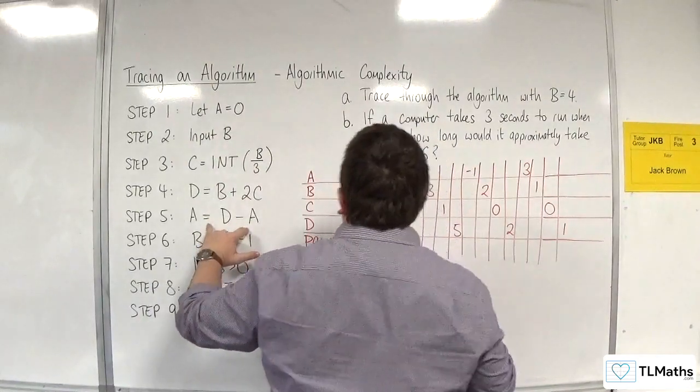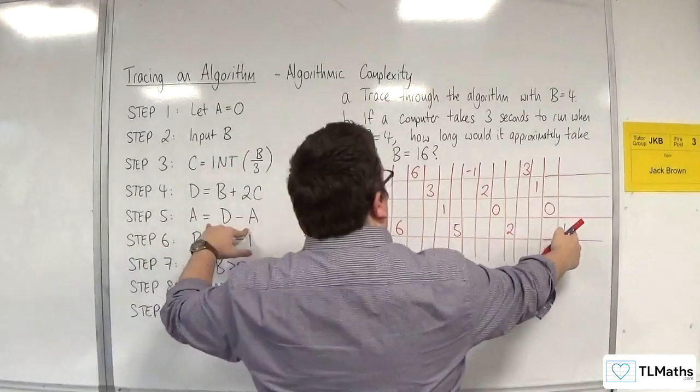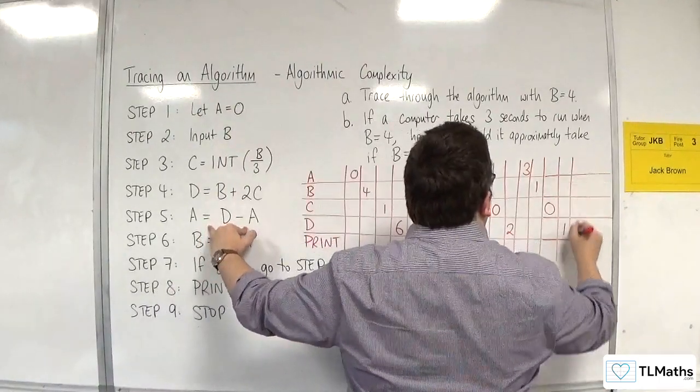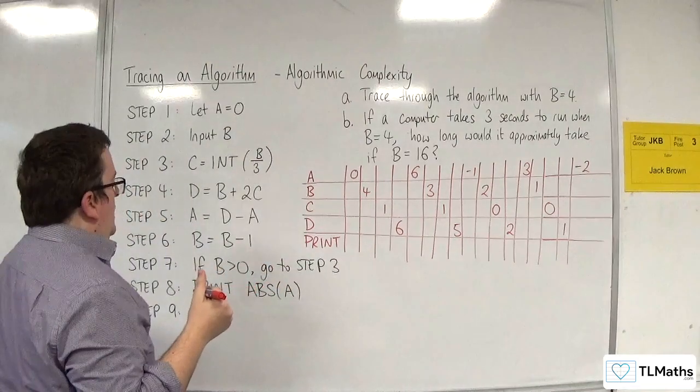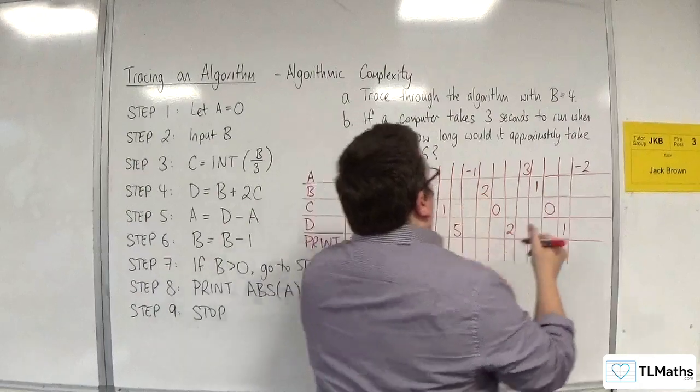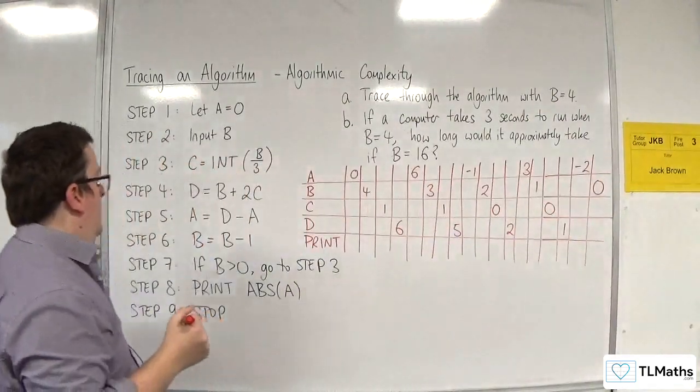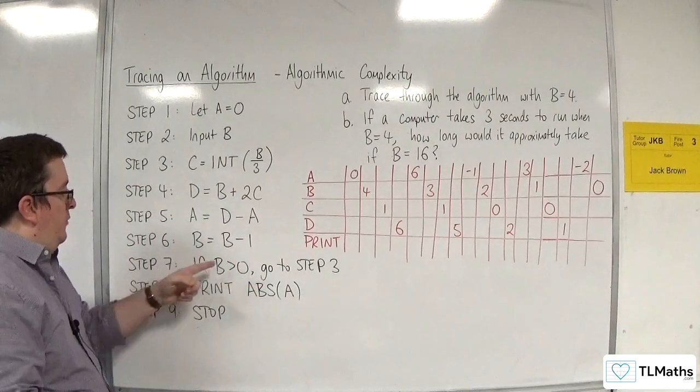A is equal to d take away a. So, 1 take away 3 would be minus 2. And then, b is b take away 1, so that is now going to be 0. And if b is greater than 0, go to step 3. Well, now it is actually 0, so we go on to the next line.